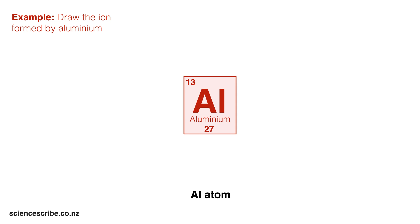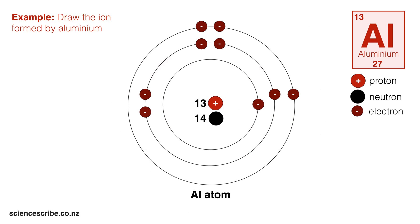Let's look at another example. This time we're going to draw the resultant ion formed by the aluminium atom. We'll start off by drawing a diagram for the aluminium atom. Remember that when I form ions, we're going to gain or lose electrons from the outermost energy level.